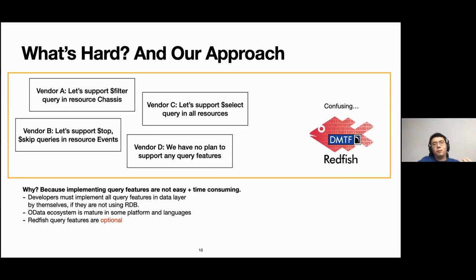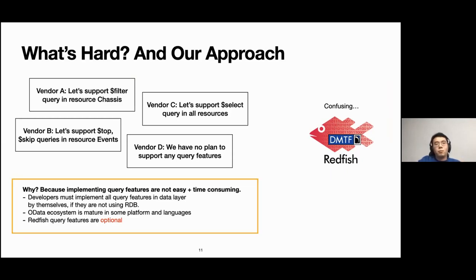So what's hard and what is our approach? The hard case we focused on was each vendor supports Redfish query in different resources with different query parameters. For example, vendor A supports filter query parameters in resource chasses and vendor B supports top and skip query parameters in resource events and vendor C supports select query parameters in all resources and vendor D may not support any query. And it can be a bit confusing to client users.